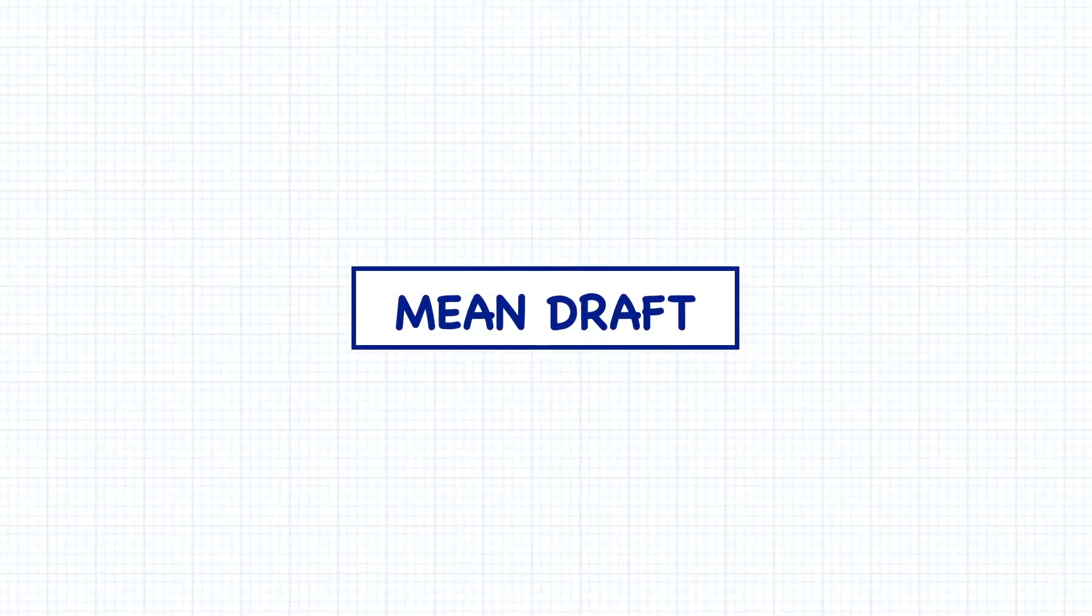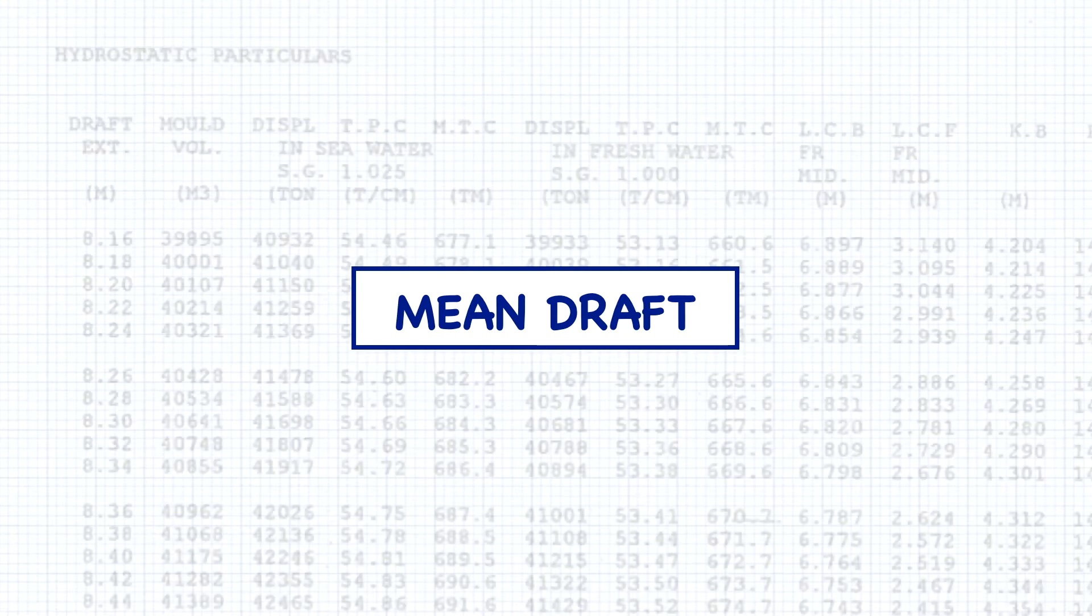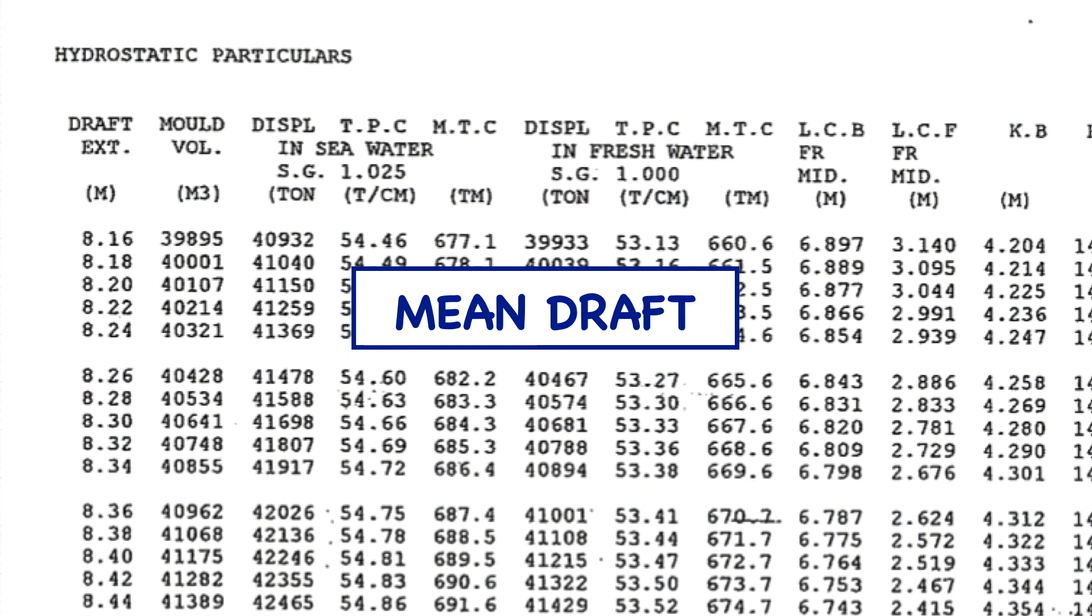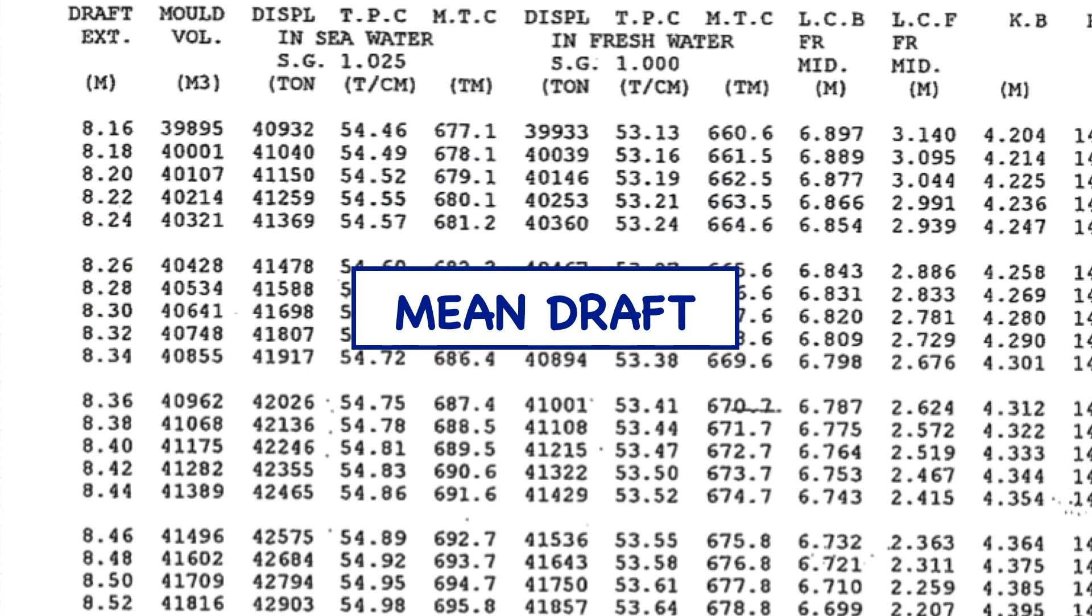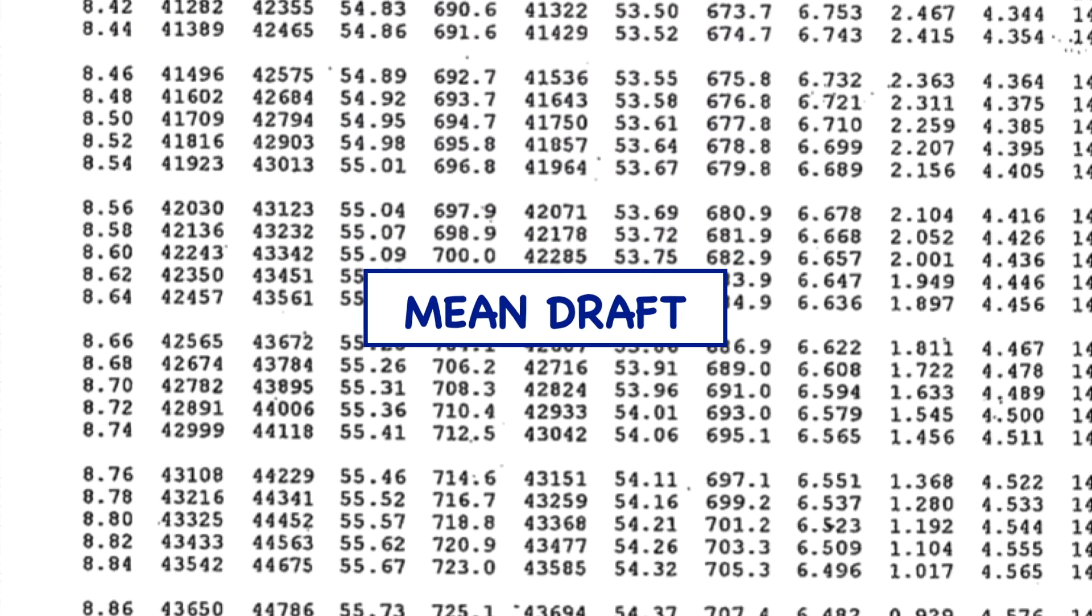Later in the course, we're going to see that the mean draft is a very important number in stability. When you enter a stability book, you normally use the ship's draft to extract information and do calculations. The draft you need to use is not the forward or aft draft, but the mean draft.